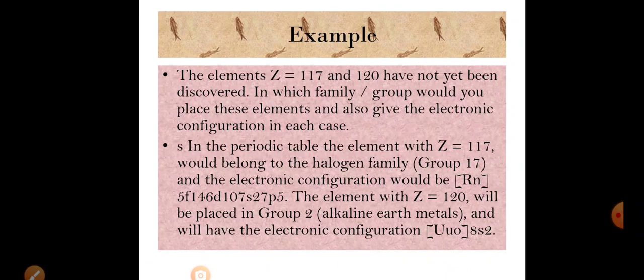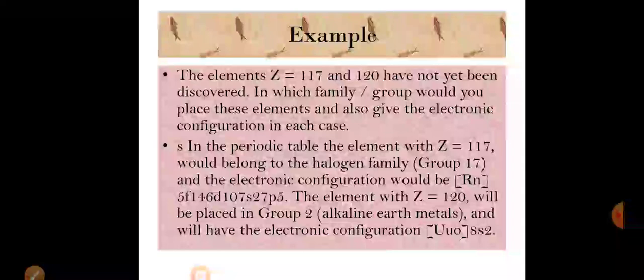Element 118 (UUO — ununoctium) would be the last noble gas of the seventh period. It is not yet discovered, so we use the temporary IUPAC symbol. The name 1-1-8 breaks down as: un (1) + un (1) + oct (8) = ununoctium, symbol UUO. Since it is undiscovered, we use the temporary name based on numerical roots.